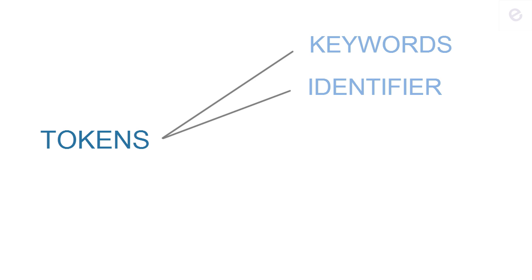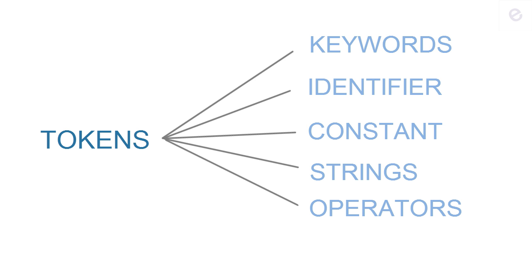Now, tokens can be categorized into six categories: keywords, identifiers, constants, strings, operators, and punctuators.